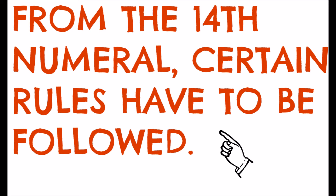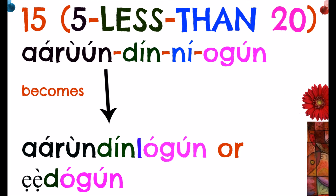We are going to start with fifteen, and this is the part where I want you to pay close attention. Fifteen is written as 'five less than twenty' — 'aaro din ni ogun' — which becomes 'aaro dilogun.' Some people might be confused: why do Yoruba people call fifteen 'aaro dilogun'? Why do we have to mention 'ogun'?